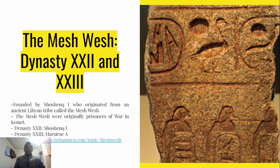Next was the Meshwesh, an ancient Libyan tribe that originally were prisoners of war under the pharaoh at that time. Their descendants then grew to become leaders. For instance, in the 22nd dynasty, the Meshwesh leader Shoshenk I, who is believed to be the one depicted on the Sphinx, ruled Egypt among other leaders. During the 23rd dynasty, the major ruler was Iuput — there's a longer name you can find in the link in the description.